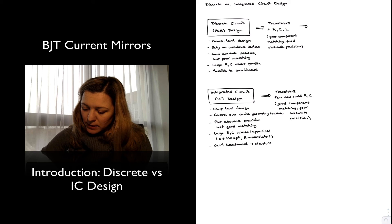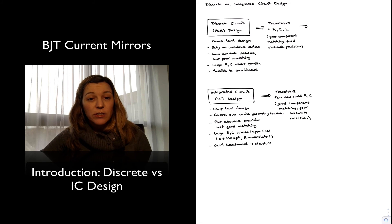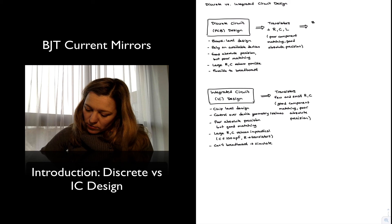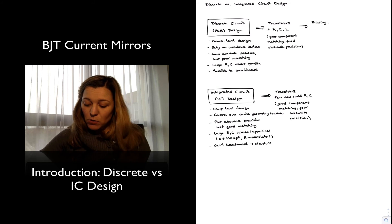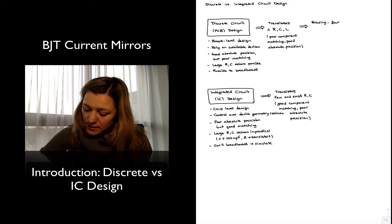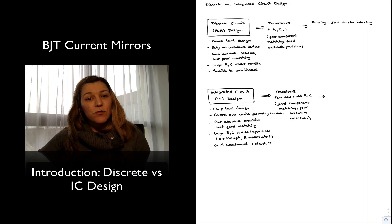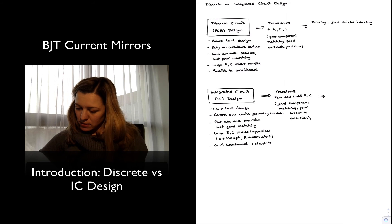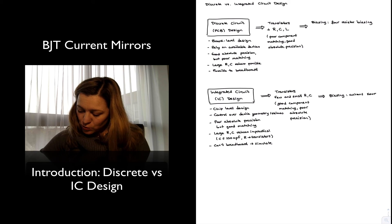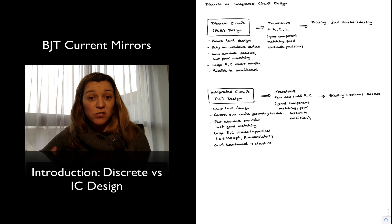Some of the techniques we have seen for discrete circuits have been biasing techniques. The biasing technique used most often with discrete circuits was the four-resistor biasing network, or the voltage divider biasing network. With integrated circuits, we are going to use a different type of network to bias our circuits — we are going to be using current sources. Biasing is going to be done using current sources, because we want to reduce the number of resistors, and the four-resistor biasing network uses nothing less than four resistors — a lot of real estate.